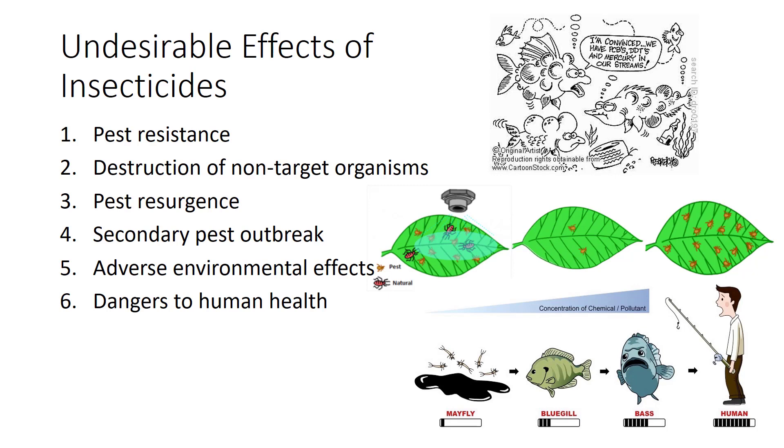Fourth, secondary pest outbreak: a combination of suppression of the original pests and effects one and two can lead to insect species previously not considered pests being released from control and becoming major pests.